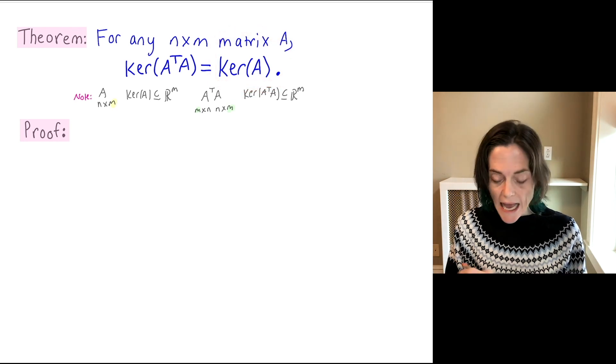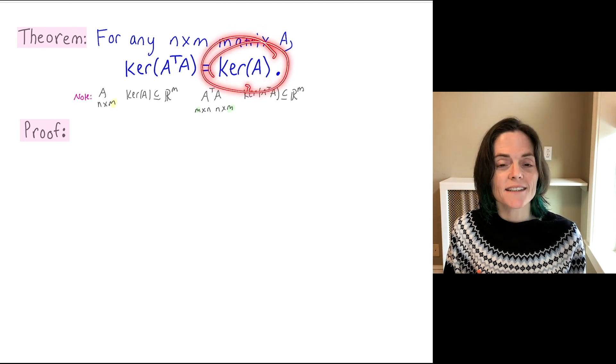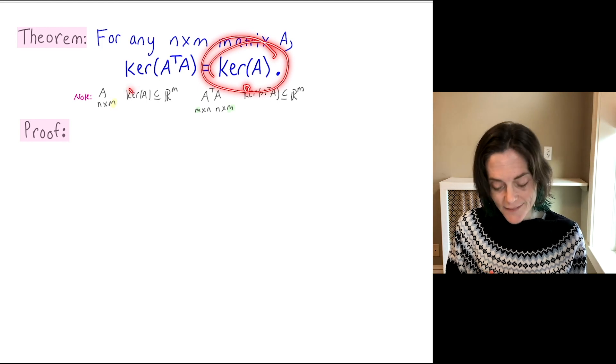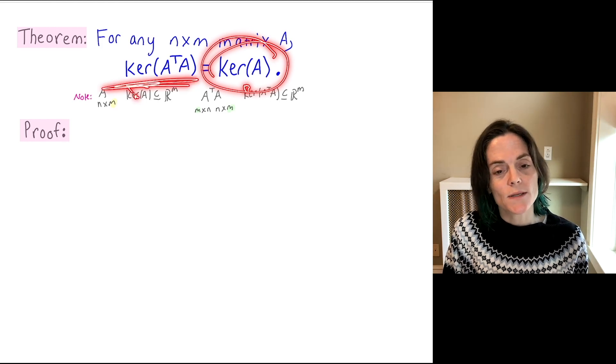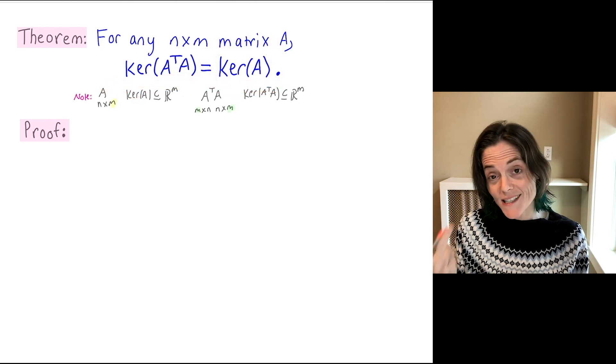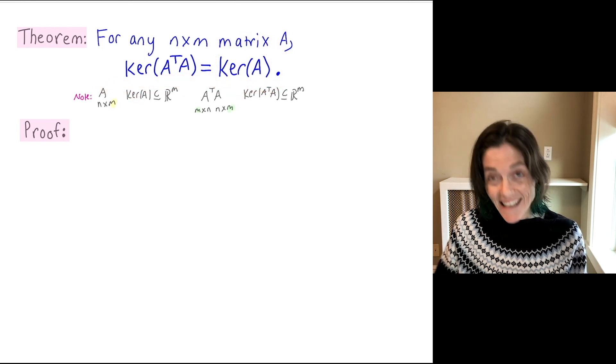And then I need to show that every vector in the kernel of A also is a vector in the kernel of A transpose A. And so there's really two parts to showing two sets are equal.